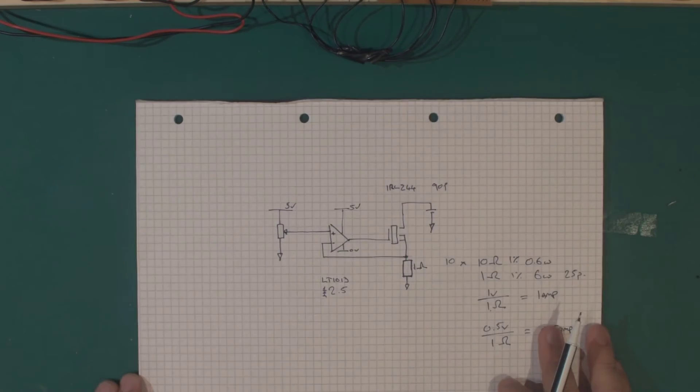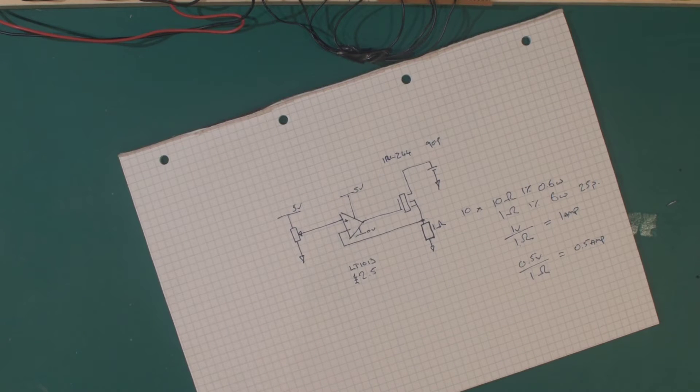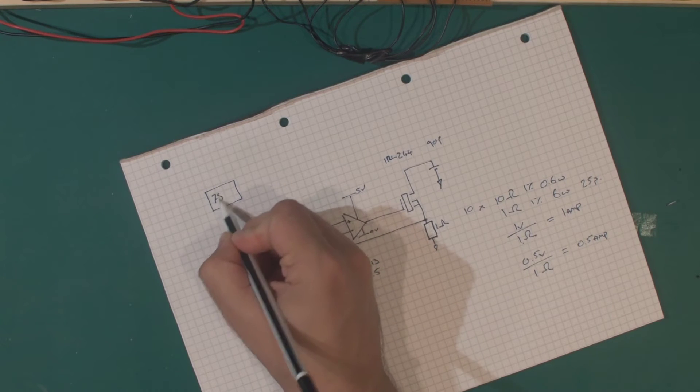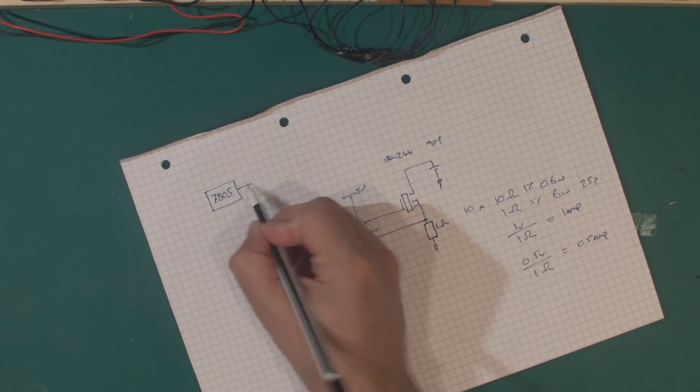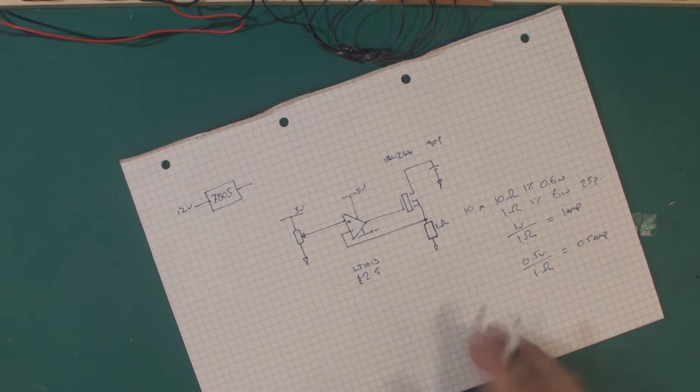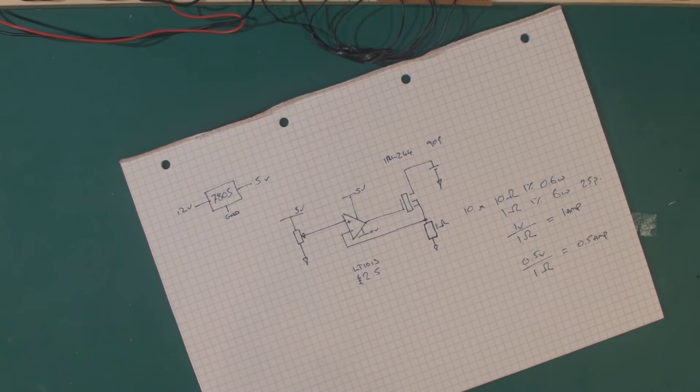So the first thing I want to do is sort out power. Previously I've been using 5V off my bench power supply. I'm going to go back to using my laptop power supply which is on the discharge station. So my 5V supply I'm going to put back in a 7805 regulator. My 12V will be coming in on one side, I have my 5V rail on the other and ground.